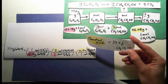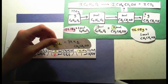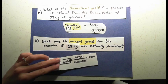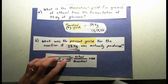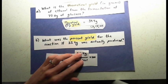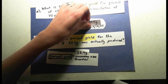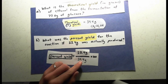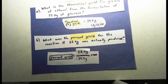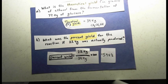That theoretical yield — 39.4 grams — is the maximum amount we could produce from 77 grams of glucose. Now that we've calculated the theoretical yield, we can solve for the percent yield. The percent yield is simply the actual yield divided by the theoretical yield times 100%. Our actual yield was 23.4 grams — that's what we actually got in the experiment. Dividing by the theoretical yield of 39.4 and multiplying by 100, we get our percent yield: 59.4%.